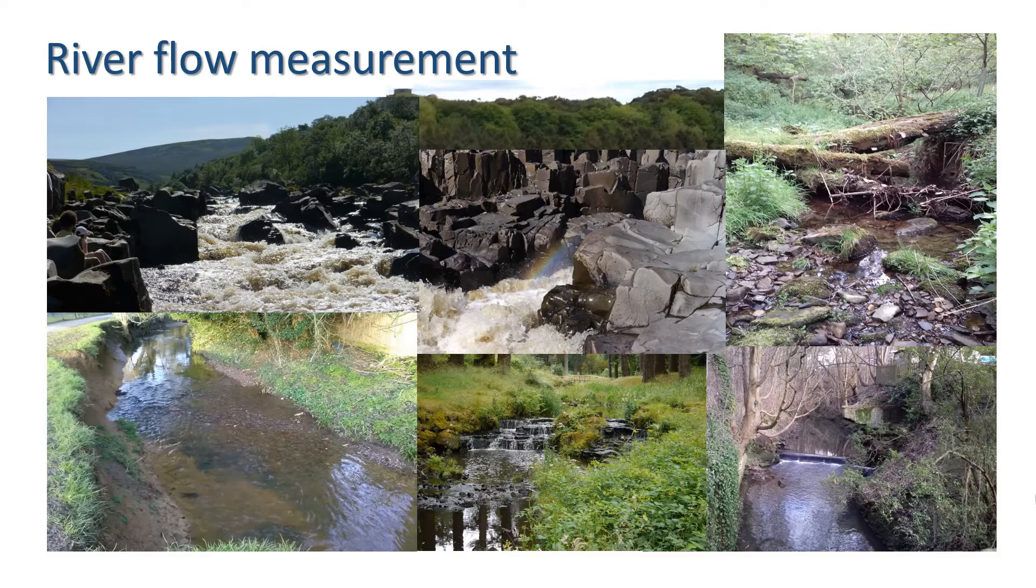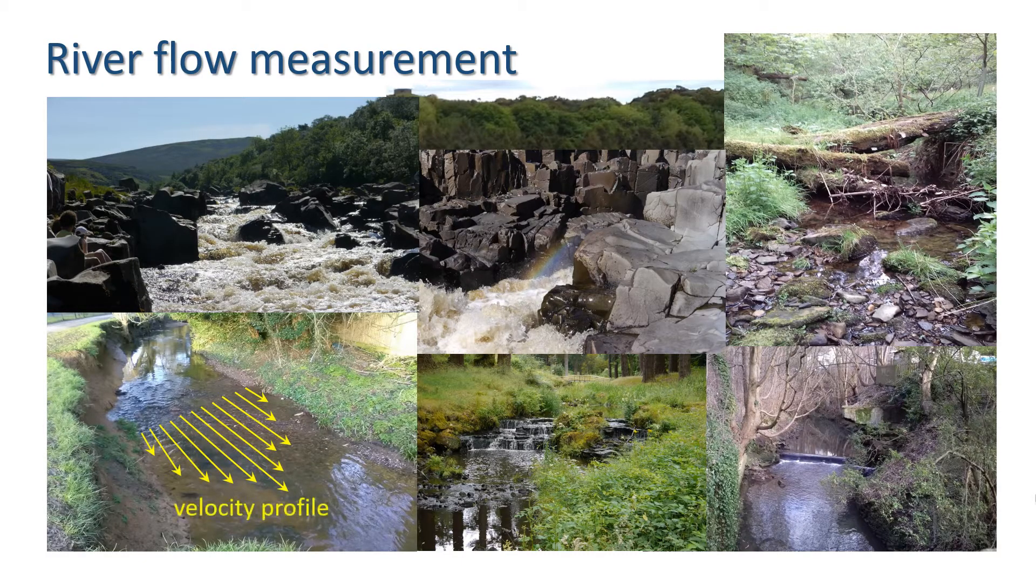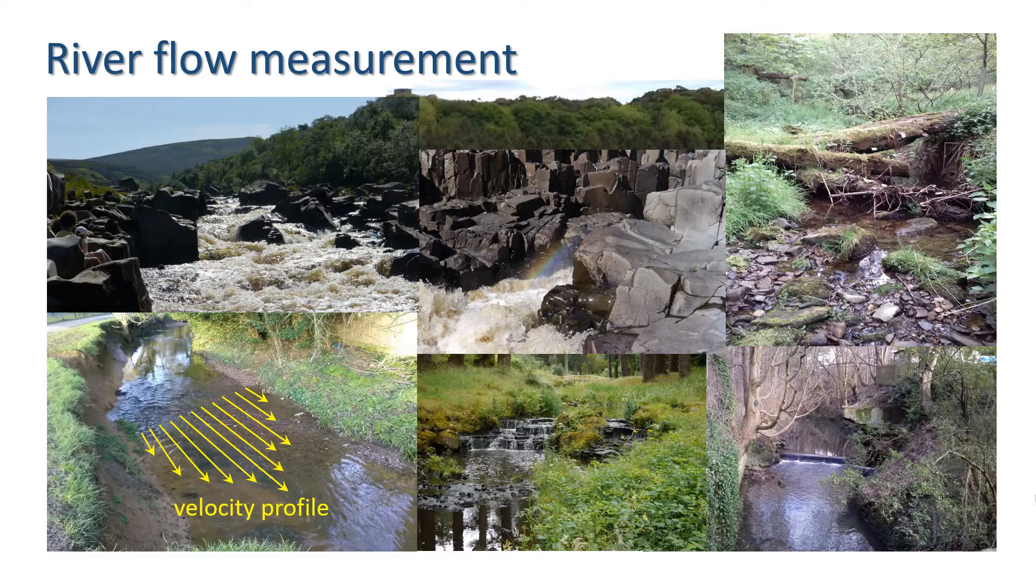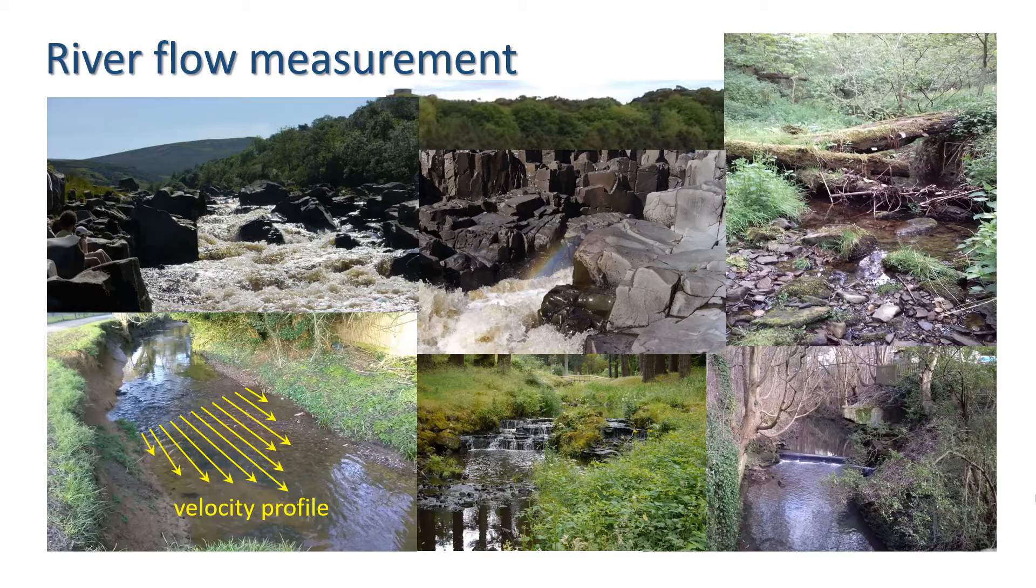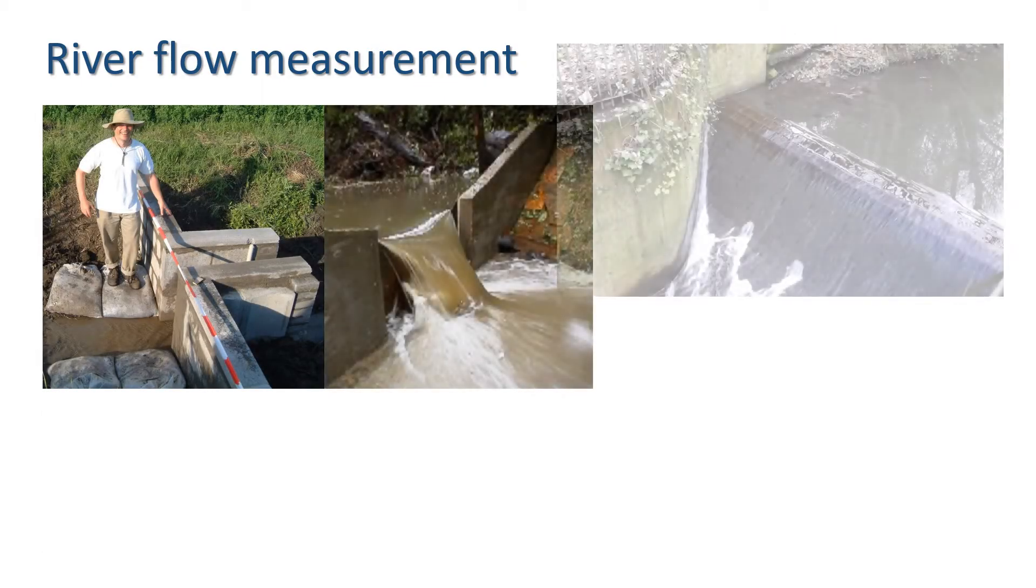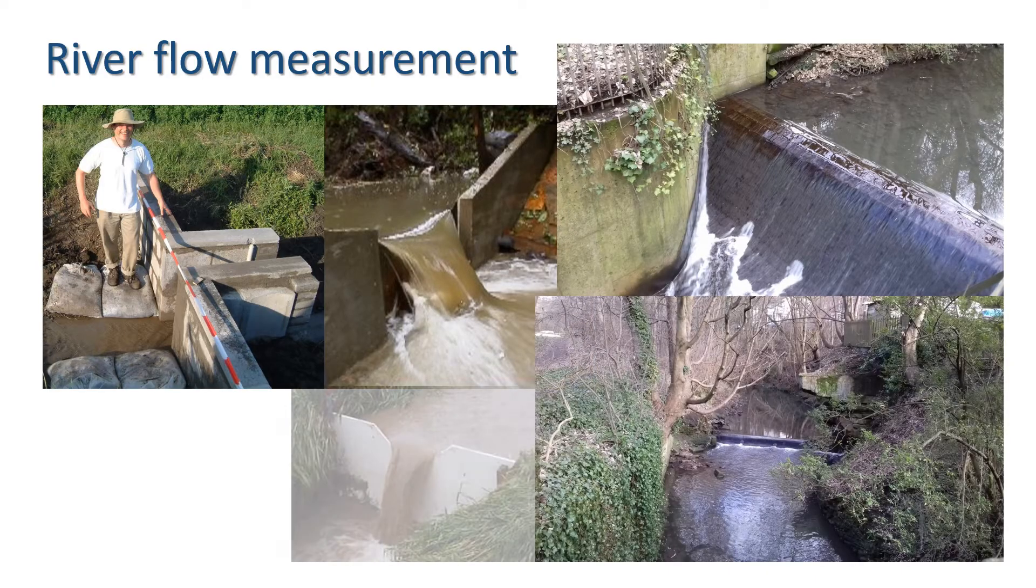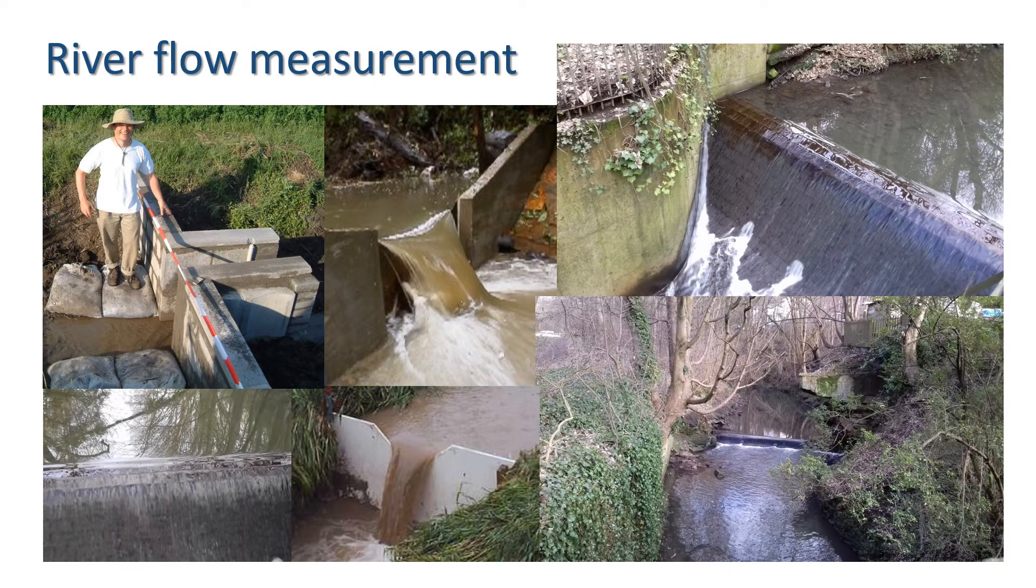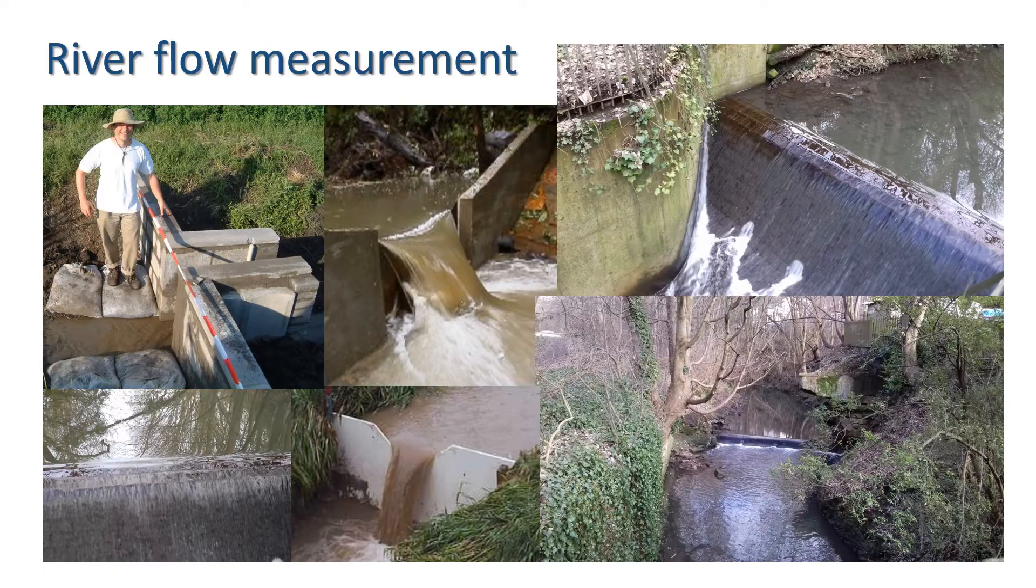Measuring flow is complicated because the velocity is variable across a river cross-section and what we are interested in generally is an integrated measure of velocity in the flow area, the discharge. One way of doing it is to use fixed structures such as flumes and weirs, where a single measurement of water level is taken and flow is calculated based on a theoretical relationship between the flow and water level.